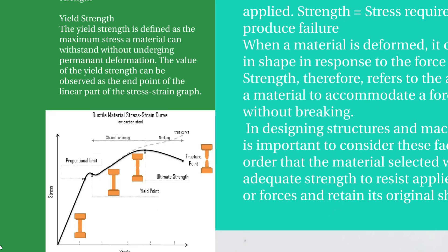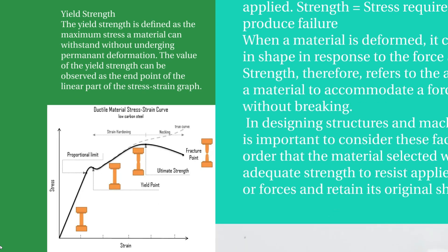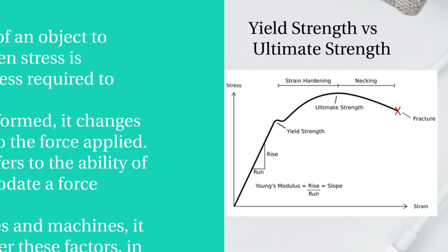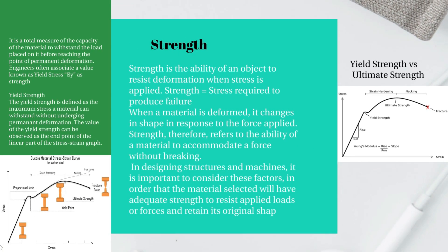Engineers often consider yield stress or yield strength. Yield strength is defined as the maximum stress a material can withstand without undergoing permanent deformation. In the stress-strain diagram, the material first undergoes elastic deformation and then plastic deformation. The yield point is where plastic deformation begins, and the stress at that point is the yield strength. The graph also shows ultimate strength — the highest resistance of the material to external force.